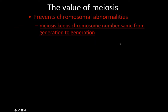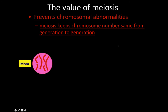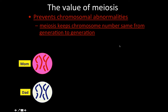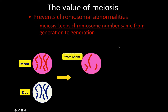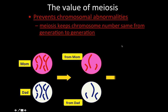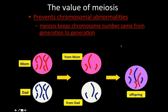Meiosis keeps the chromosome number the same from generation to generation. Mom has her chromosomes, dad has his chromosomes, they go through meiosis, and after fertilization the offspring has half the chromosomes from mom and half from dad — a combination of both. So the offspring doesn't look exactly like mom and doesn't look exactly like dad.